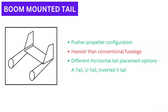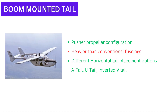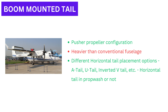Boom-mounted Tails: This type is usually used for pusher propeller configuration aircraft. A heavy jet engine can be placed near the center of gravity in this type. Tail booms are typically heavier than conventional fuselage construction. Twin booms can have different placements of the horizontal tail, giving different configurations such as U-tail, mid-mounted tail, or a twin boom inverted V-tail. The design choice depends on whether the horizontal tail needs to be placed in the prop wash or not. Placing the tail in the prop wash gives more control, but also increased drag.